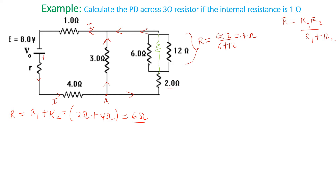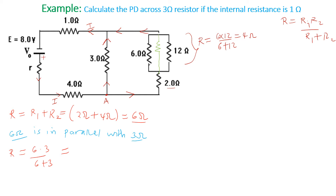Instead of the 6, 12, and 2-ohm resistors we now have only a 6-ohm resistor. This 6-ohm is in parallel with the 3-ohm resistor. Their effective resistance is 6 times 3 over 6 plus 3, which is 18 over 9, giving 2 ohm.